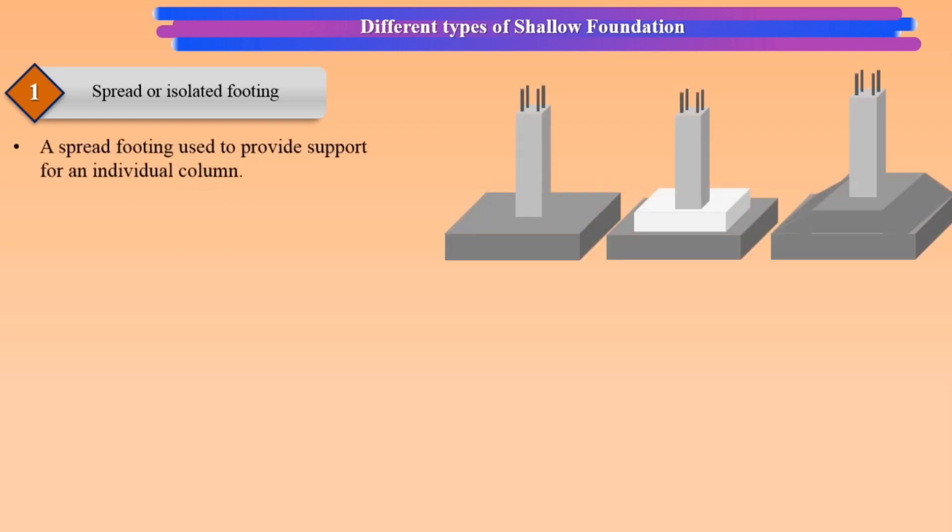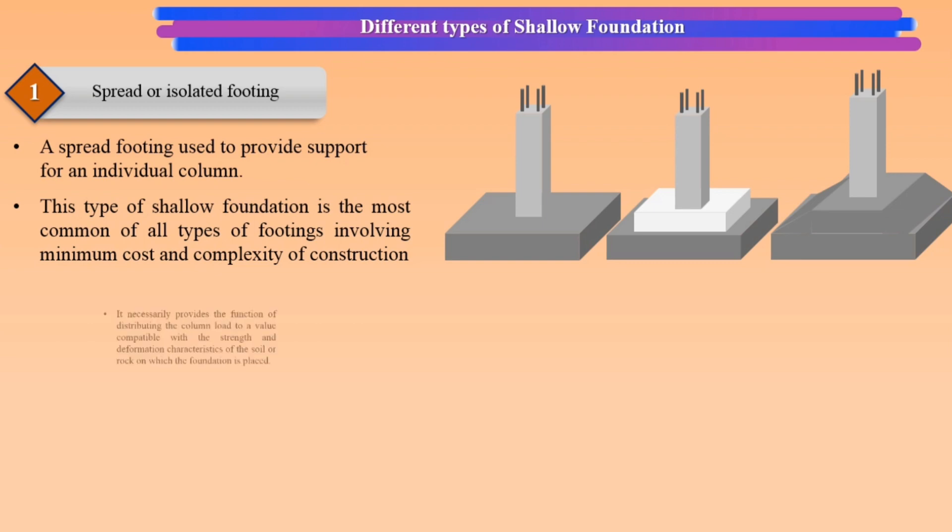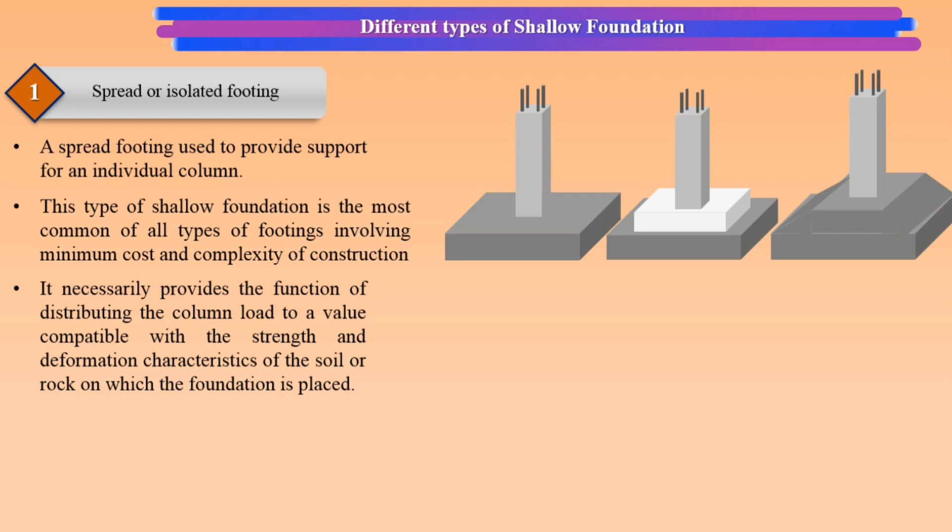Spread or isolated footing: A spread footing is used to provide support for an individual column. This type of shallow foundation is the most common of all types of footings, involving minimum cost and complexity of construction.